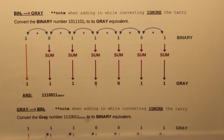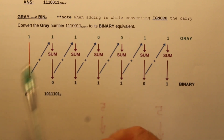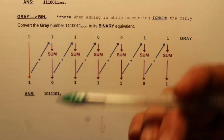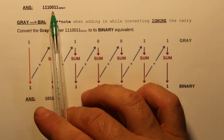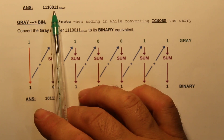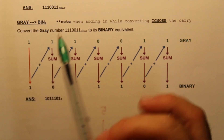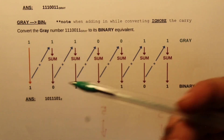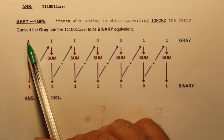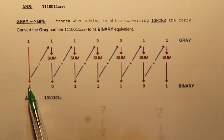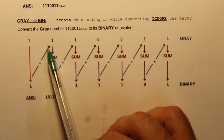Now if they ask us to reverse the process, they can give us the Gray Code number and ask us to convert it back to binary. I've taken the same answer we just got from binary to Gray, written it here on top in green, and we're going to convert it back to binary to see if we can get back to the original number. Just like before, we take the first digit and drop it down.